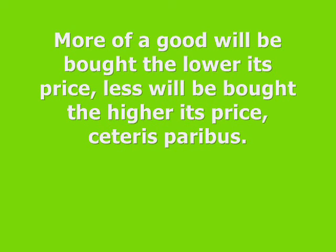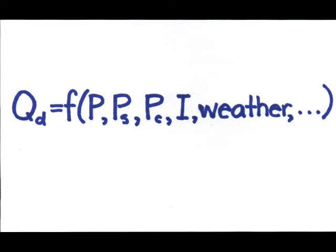The focus is on quantity demanded and price. Quantity demanded, or what you buy, of course depends on all the factors just mentioned. Quantity demanded is a function of price of the product, price of substitute products, price of complementary goods, it depends on the income, it depends on the weather, politics, all this stuff.